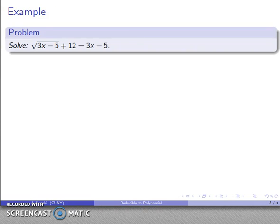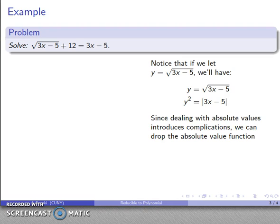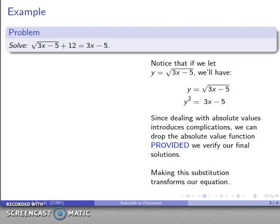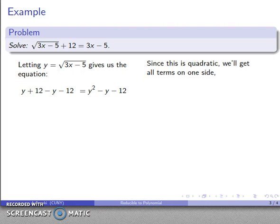So let's see how we can apply that. There's my equation involving the square root. I make the observation that 3x minus 5 appears a couple of times. If I let y equal the square root of 3x minus 5, by the definition of square root, squaring both sides gives y squared equals the absolute value of 3x minus 5. Dealing with absolute values often introduces complications, but I can drop the absolute value as long as I verify my final solutions. The substitution transforms the equation into y plus 12 equals y squared — a quadratic equation that I know how to solve.